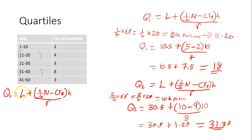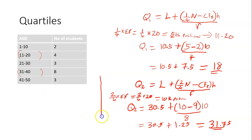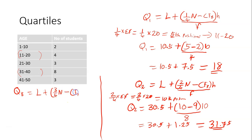Now, to find the third quartile — for the third quartile, the formula will be L plus into brackets 3 over 4 N minus CFB, brackets close, H divided by F.